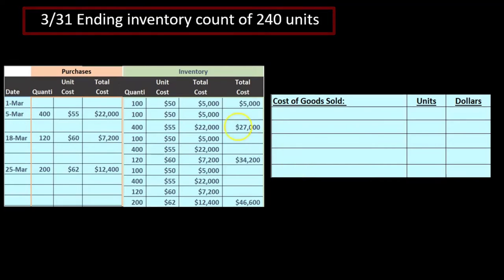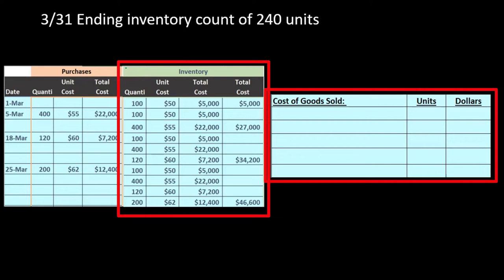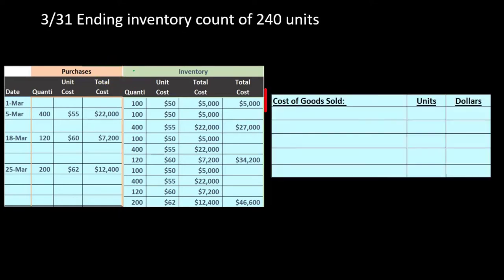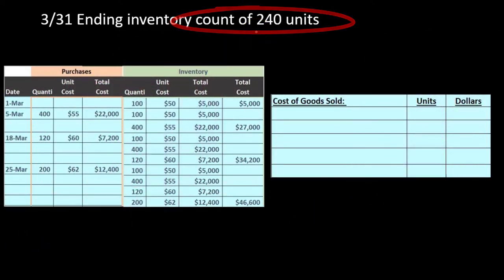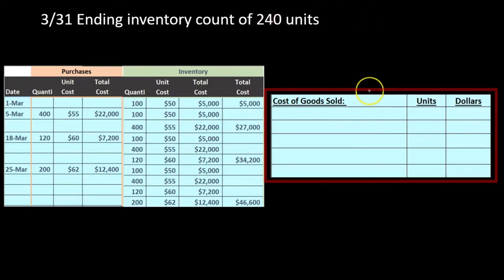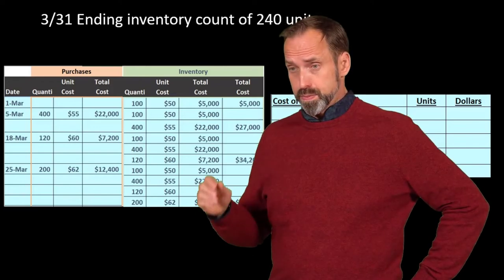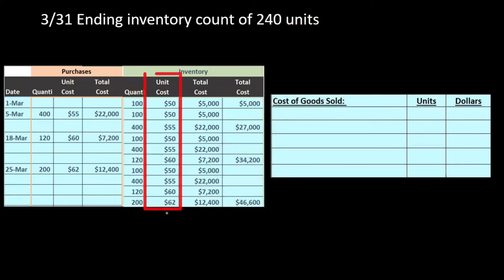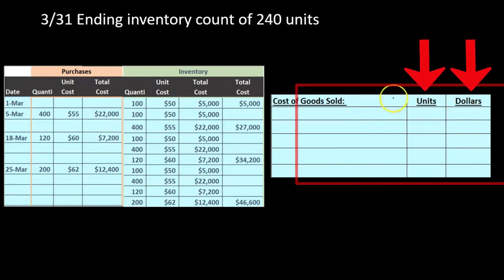It's now the end of the period. We do a physical count and find 240 units remaining. This is the key component of the periodic system — we now work on the cost of goods sold column. We use the cost of goods sold calculation: beginning inventory plus purchases equals goods available for sale, minus ending inventory equals cost of goods sold. This must be memorized as it is an essential component.